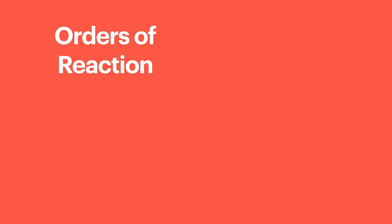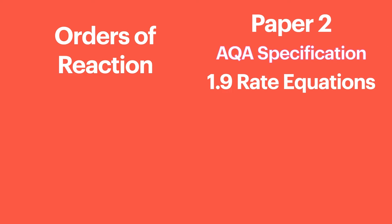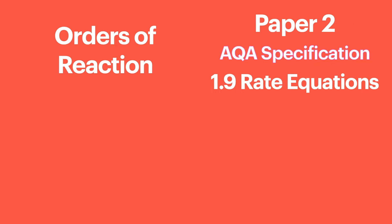Hello chemists and welcome back to Bale's Chemistry. In this episode we're going to look at how we actually calculate the rate equation from experimental data. You'll find this in the AQA specification under 1.9 rate equations and it is primarily covered on paper 2 of your final exams.